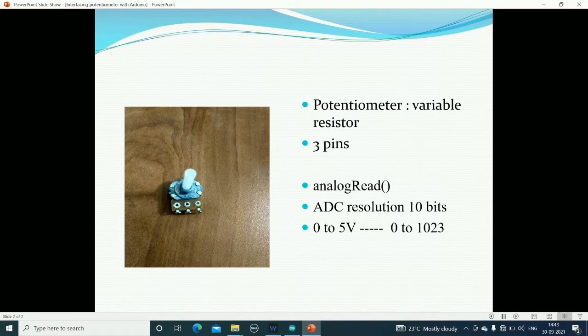When you vary that potentiometer, the value will change. When you rotate this potentiometer and it is connected between 0 and 5 volts, it will provide the voltage range from 0 to plus 5 volts.